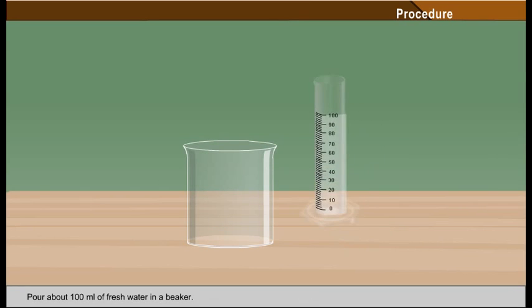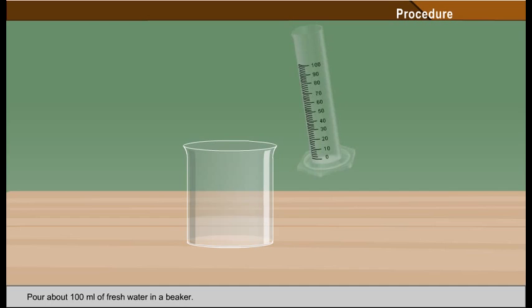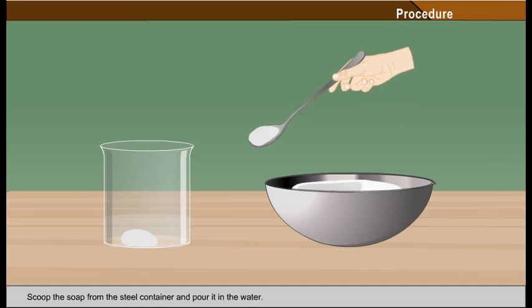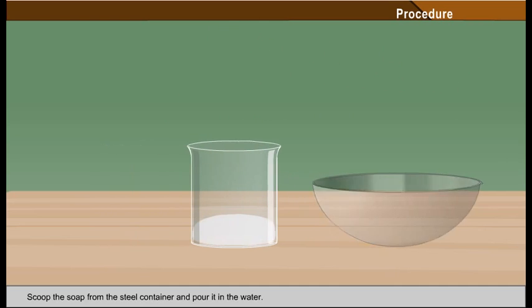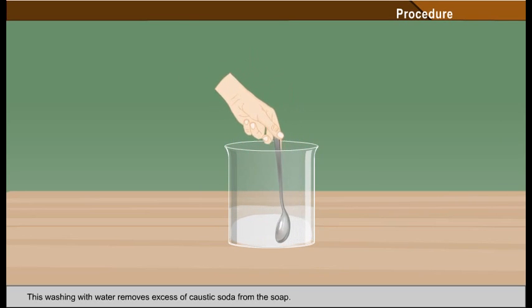Pour about 100 millilitres of fresh water in a beaker. Scoop the soap from the steel container and pour it in the water. Stir gently. This washing with water removes excess of caustic soda from the soap.